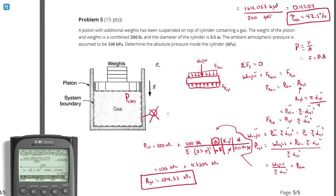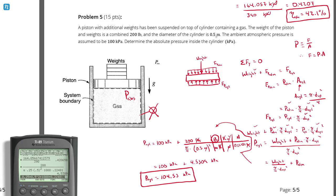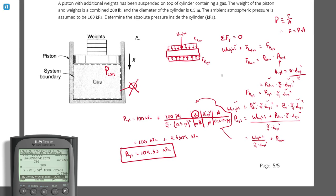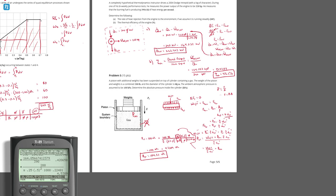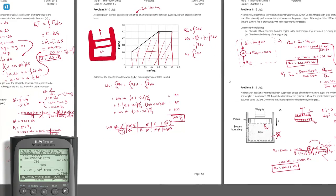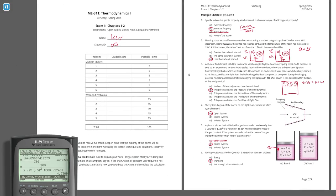So the absolute pressure inside this piston-cylinder arrangement is about 104.5 kilopascals. That's a relatively low number — 200 pounds of weight only contributes about four and a half more kilopascals. That's because the cylinder is so large at half a meter in diameter, so the weight is distributed over a large area. Regardless, that concludes problem five, which is the last problem on this exam. Congratulations, we've completed exam number one from the spring 2015 semester of Thermal One.